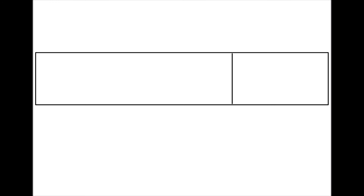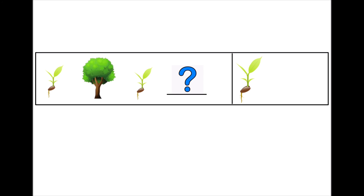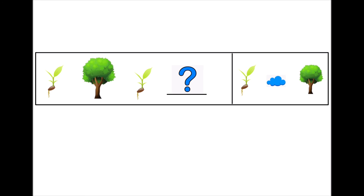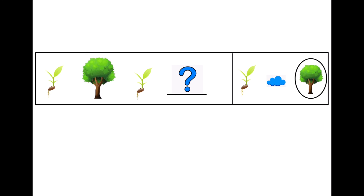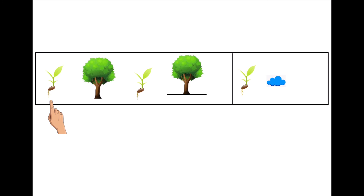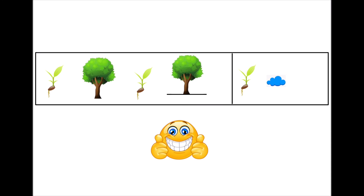Let's try to play a game. Are you ready? Okay! Let's start with a sprout, a tree, a sprout... and what's next? Is it a sprout? A cloud? Or a tree? Can you guess? I'll give you some time. Five, four, three, two, one. And the answer is... it's the tree! Very good. The sequence is: sprout, tree, sprout, and a tree.